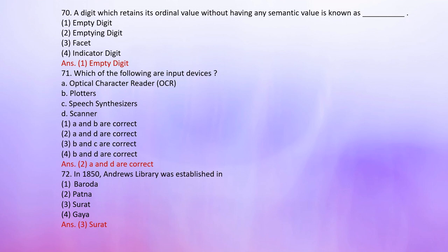Number 72: In 1850, Andrews Library was established in — 1. Varanasi, 2. Patna, 3. Surat, 4. Gaya. The correct answer is 3: Surat.